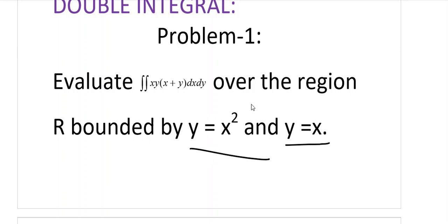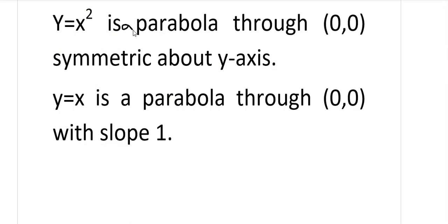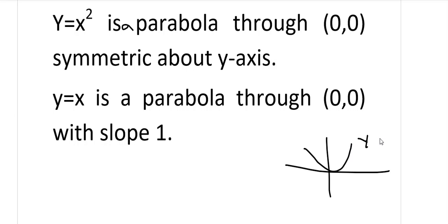First we will discuss the region. What is the region bounded by these two curves? y = x² is a parabola through the origin symmetric about the x-axis. The other curve is the straight line y = x passing through the region. The region bounded by the two curves is the shaded region, which is the required region.